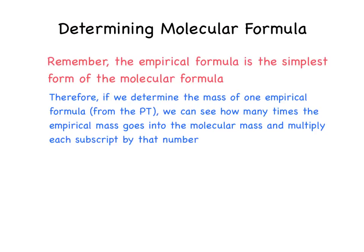Well, once you know the empirical formula, there's only one little small step left to get the molecular formula. Since the empirical formula is the simplest form of the molecular formula, all we have to do are these steps right here. Determine the mass of the empirical formula from the periodic table, and then see how many times the empirical mass goes into the molecular mass. You have to be given the molecular mass in order to determine the molecular formula.